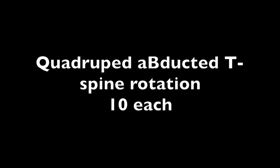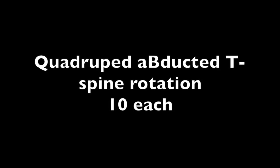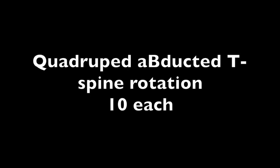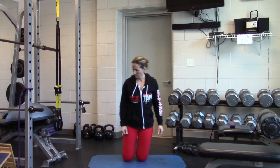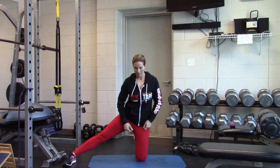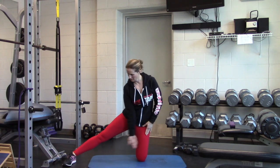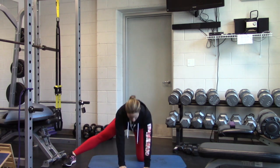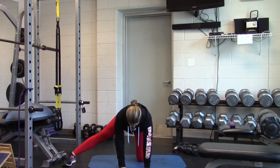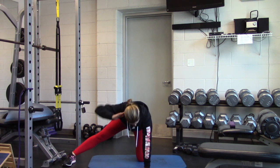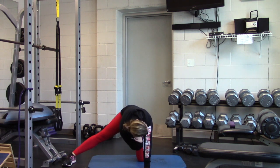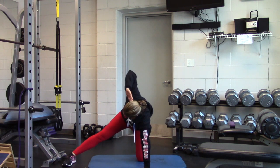Get back into quadruped position and take one leg straight out to the side. You want to line up the instep of the foot with the knee that's down. Take your hand behind your head and we're going to do T-spine rotation, ten on each side. Make sure that the hand that's on the ground is the same knee that's on the ground.